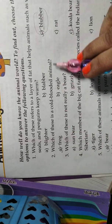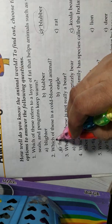Which of these is a cold-blooded animal, frog, eagle, rat? Frog is the correct answer.